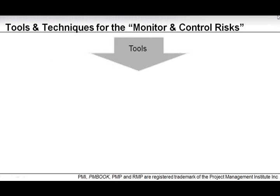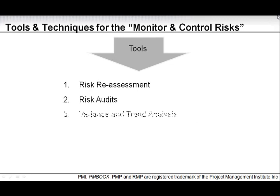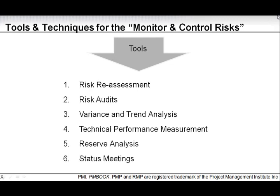Now let's look at the tools and techniques for monitoring and controlling risks. We have six in total: risk reassessment, risk audit, variance and trend analysis, technical performance measurement, reserve analysis, and status meetings. Let's look at them one by one.